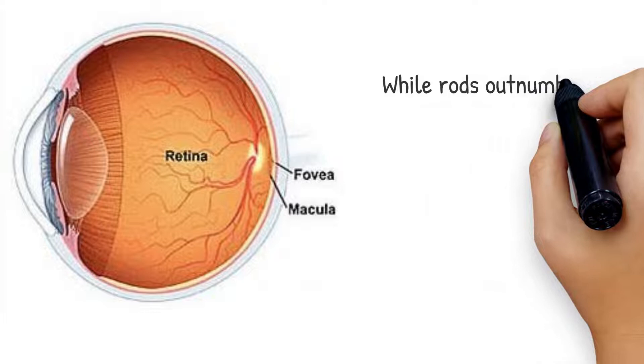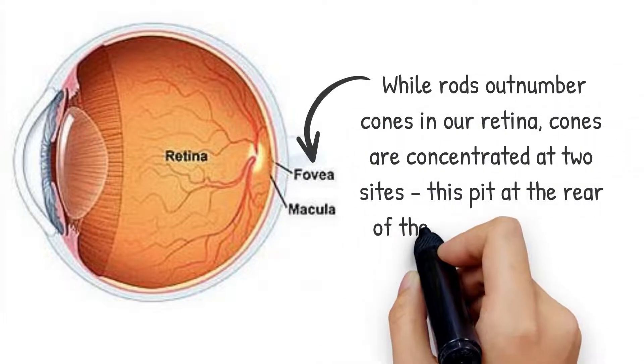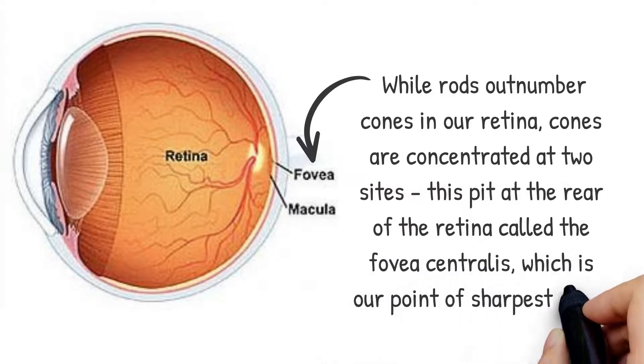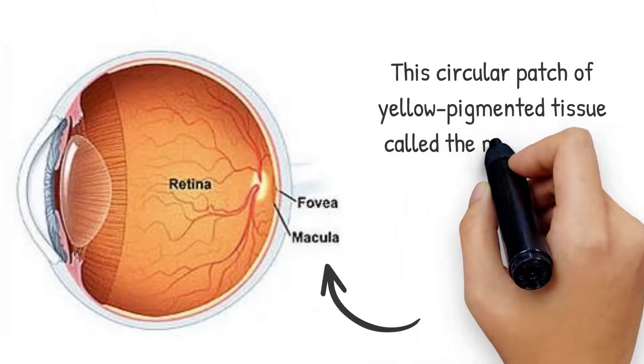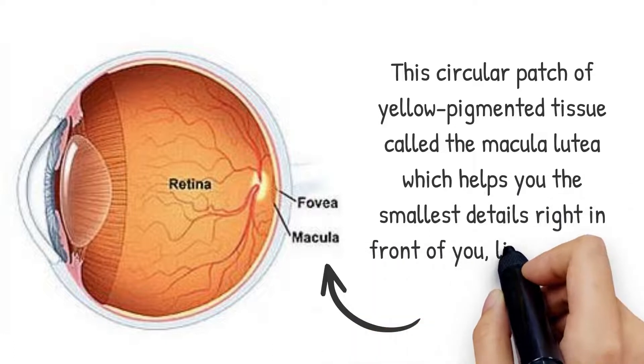With rods outnumbering cones in our retina, cones are concentrated at two sites. This pit at the rear of the retina called the fovea centralis, which is our point of sharpest focus, and this circular patch of yellow pigmented tissue called the macula lutea, which helps view the smallest details right in front of you, like text in a book.